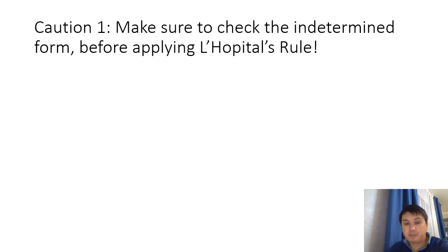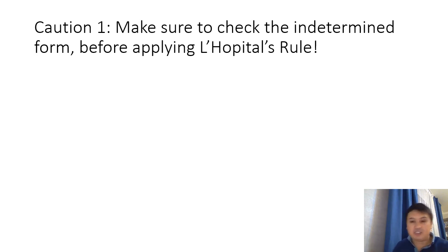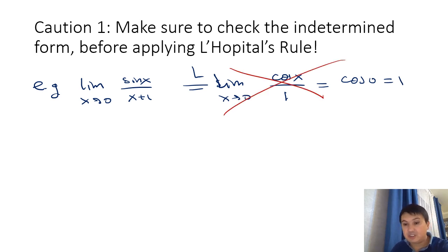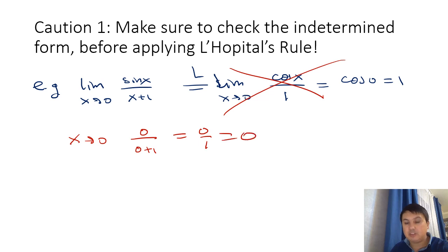L'Hôpital is very powerful but we need to be careful. The first caution: always check that you're in an indeterminate form. If it's not indeterminate, you cannot take derivatives of numerator and denominator separately. For example, lim x→0 of sin(x)/(x+1): the numerator goes to 0 and the denominator goes to 1, so it's 0/1 = 0 — not indeterminate. Incorrectly applying L'Hôpital gives cos(0)/1 = 1, which is wrong. The limit is 0.